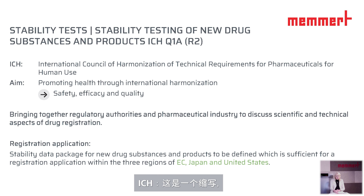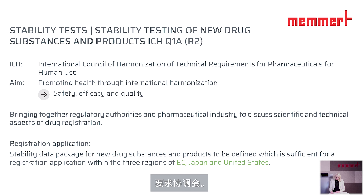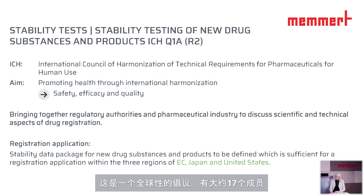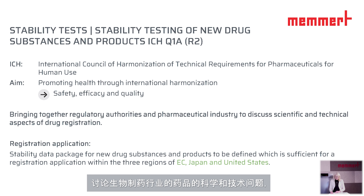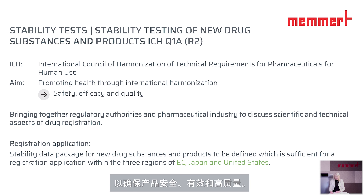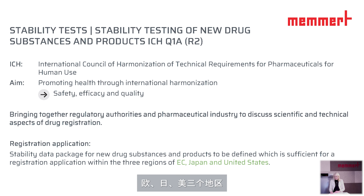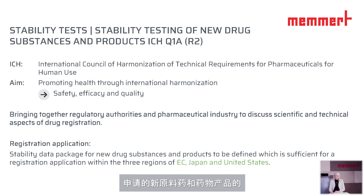ICH is an abbreviation for the International Council of Harmonization of Technical Requirements for Pharmaceuticals for Human Use. This is a global initiative and the organization has about 17 members and 32 observers. It brings together regulatory authorities and pharmaceutical industry to discuss scientific and technical aspects for pharmaceuticals, develop ICH guidelines, and achieve greater harmonization worldwide to ensure that products are safe, effective, and of high quality. It also determines the stability data package for new drug substances and drug products sufficient for registration application within the three regions of European Community, Japan, and United States, which refers to climate zones 1 and 2.